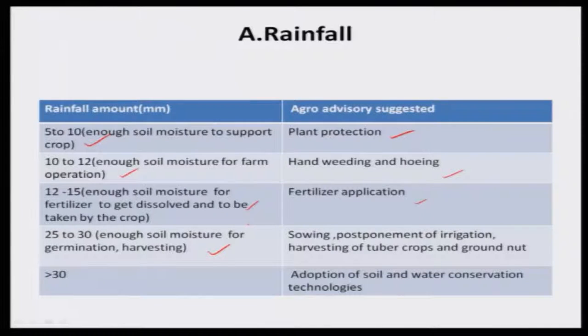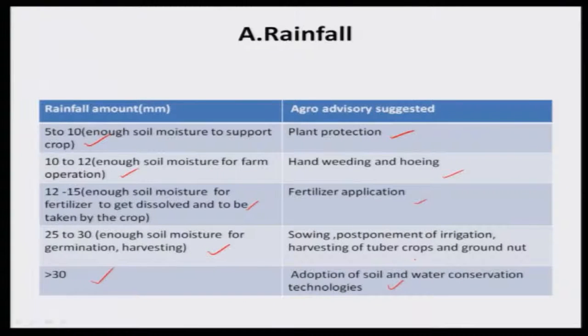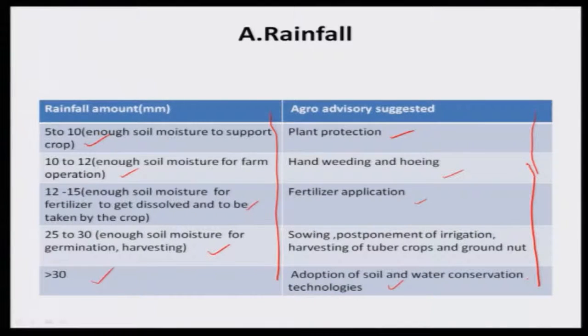If rainfall is 25 to 30 millimeters, sowing under dryland can be done. Under irrigated conditions, you can also start sowing by saving groundwater — integrating groundwater with rainfall. When rainfall is greater than 30 millimeters, there will be soil loss through soil erosion. Take appropriate action using soil erosion and water conservation technologies. Science is on one side and decision-making based on past experience is on the other — you combine both together.